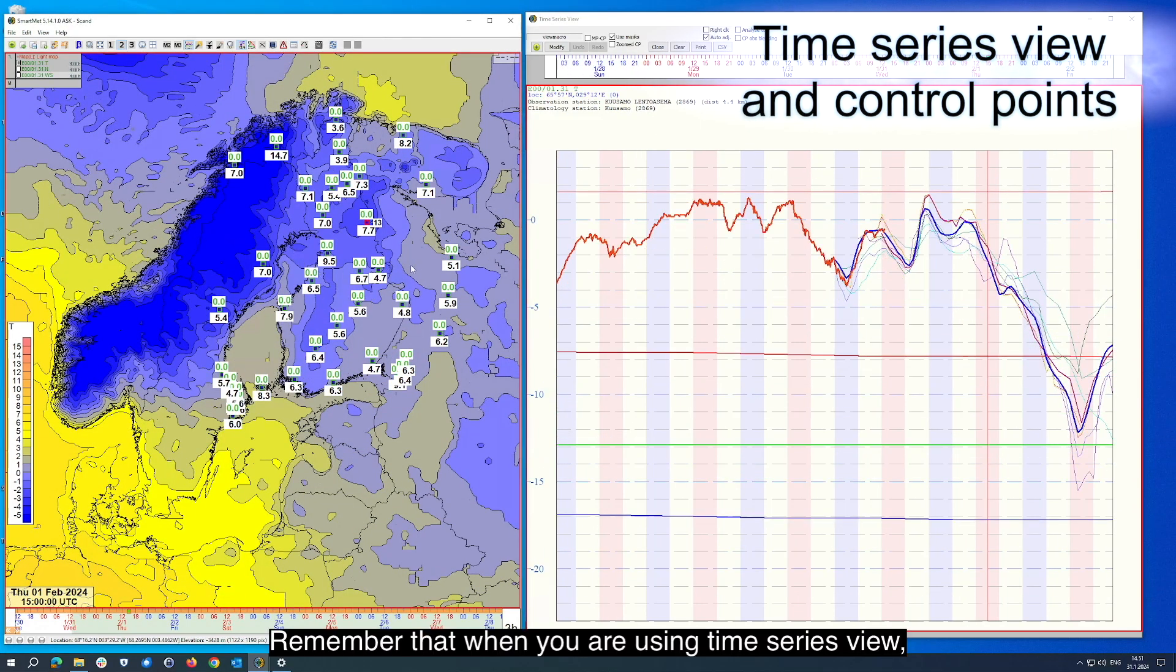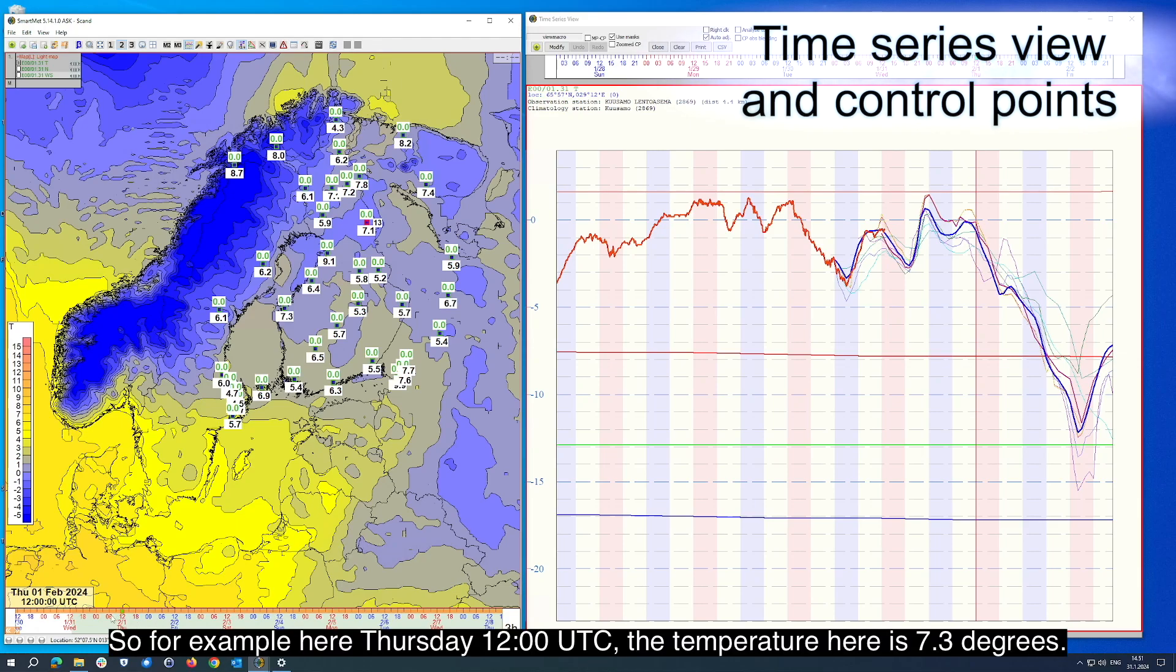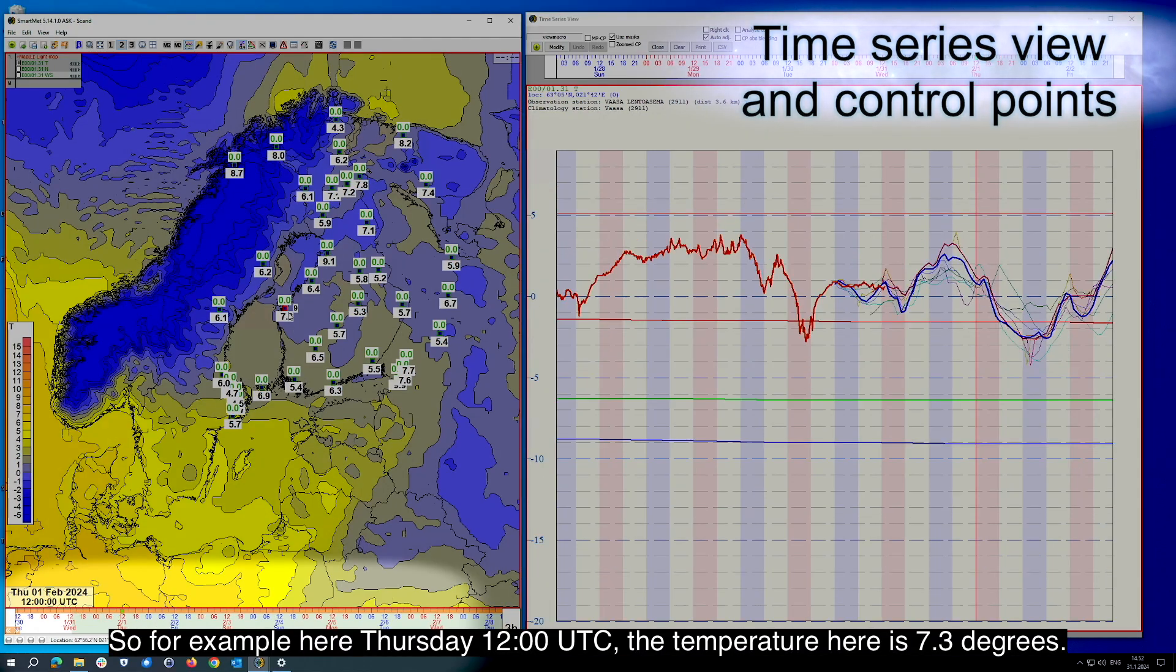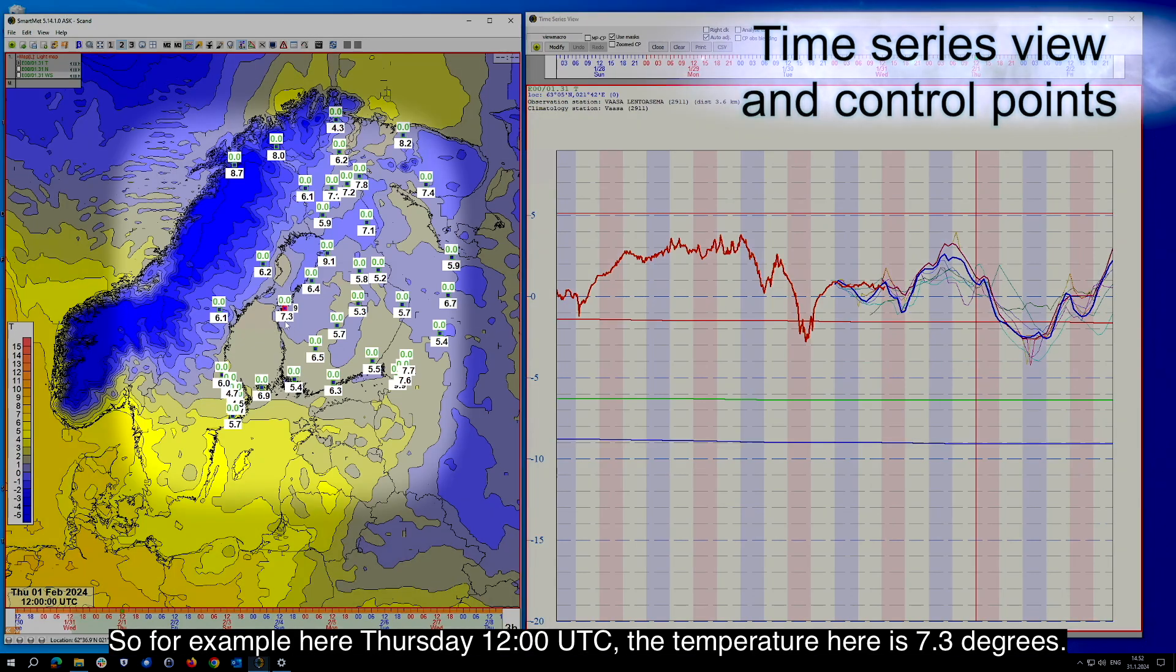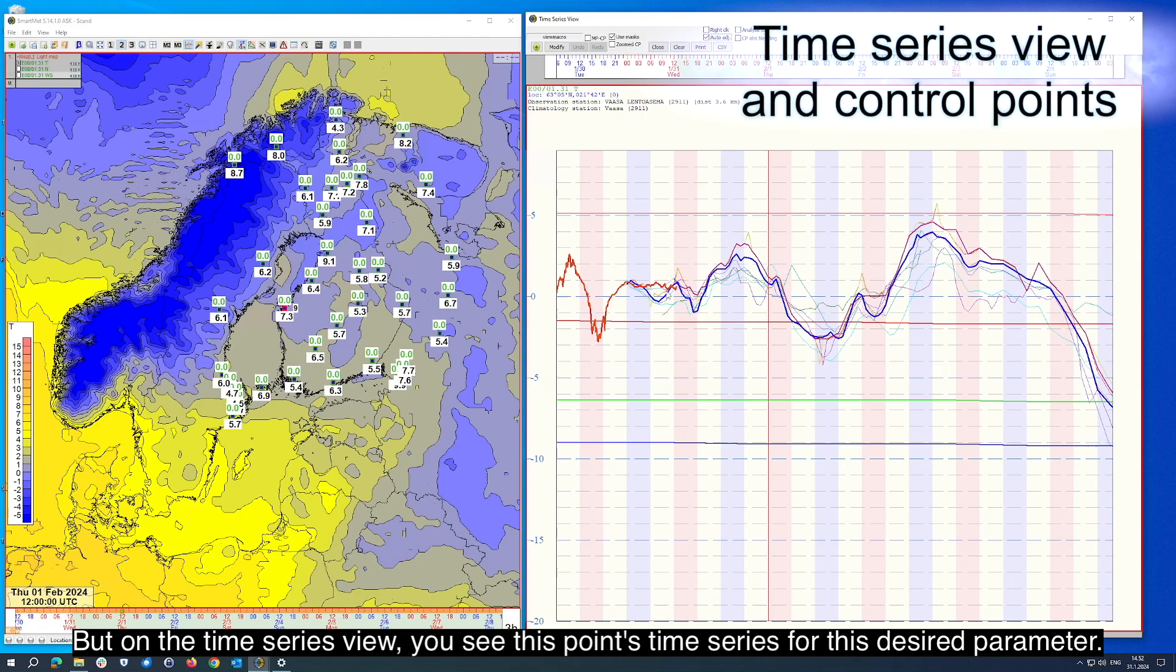Remember that when you are using time series view, the time on the map is always from one time. So for example here, Thursday 12 UTC, the temperature here is 7.3 degrees, but on the time series view you see this point's time series for this desired parameter.